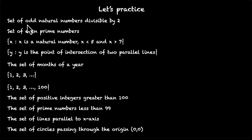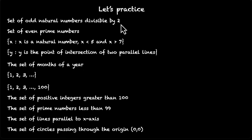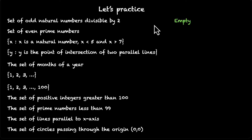Set of all odd positive numbers divisible by 2. If the numbers are odd, how can they be divisible by 2? There's a contradiction here, which means there's nothing in the set. This is an empty set.